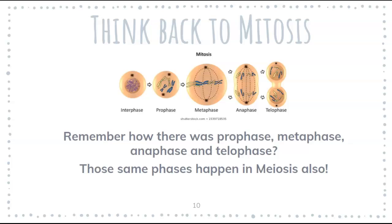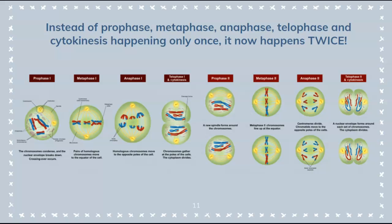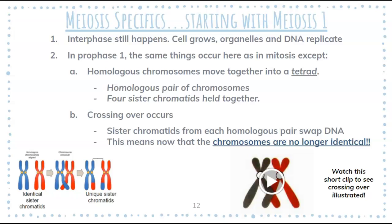Hopefully this is still fresh in your mind — in mitosis you had four main parts: prophase, metaphase, anaphase, telophase, and then cytokinesis. Well, meiosis is going to be very similar, but instead of happening just once, it happens twice. That's how we get to four cells — we first divide one cell into two, and then each of those two cells divides again. You still have interphase where your cell grows, organelles and proteins are made, DNA replicates, all that good stuff. Then your cell moves into prophase one — nuclear envelope disappearing and all that.